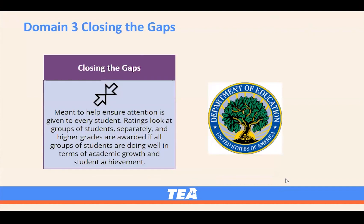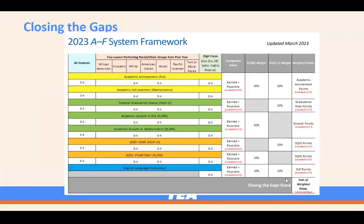Domain three, closing the gaps, is federal accountability. This domain will look at different groups of students' performance on their grade-level math and reading, their growth, CCMR, graduation rates, STAR, and TELPAS. Three big changes for domain three are: the targets were updated by campus type, the student groups have been narrowed, and we now have a point system of zero to four. The four groups that we're now going to evaluate are all students, the two lowest performing racial and ethnic groups based on the previous year's math and reading academic achievement, and a new high focus group. The new high focus group is made up of economically disadvantaged, emergent bilingual, special education, and highly mobile students. Students will only be counted once in that group, even if they qualify for more than one.